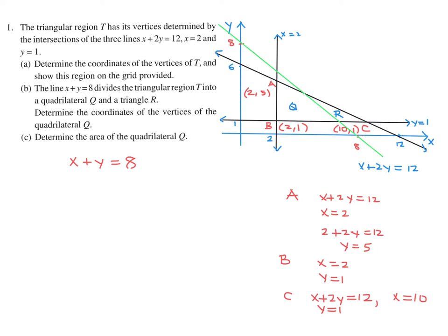They want the coordinates of the vertices of Q. The vertices are A, B, and two new points D and E. We already know A is (2, 5) and B is (2, 1). Point D is the intersection of x plus y equals 8 and y equals 1. Substituting gives x equals 7, so D is (7, 1).